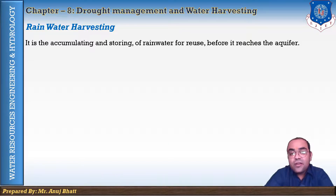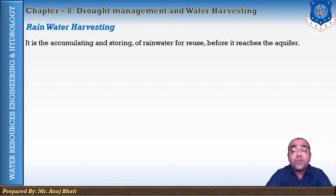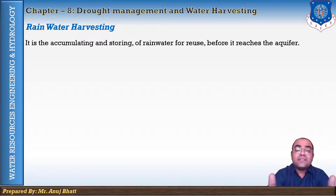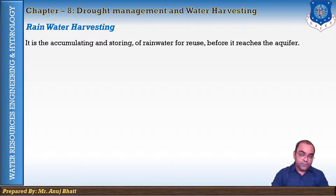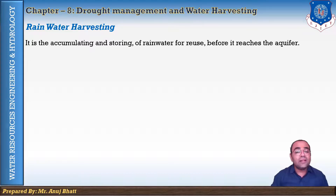A major part of our country has been continuously facing failure of monsoon and consequent deficit of rainfall over the last few years. Due to the increasing population of India, use of groundwater has increased drastically, leading to constant depletion of groundwater levels, causing bore wells and tube wells to go dry. In some places, excessive heat waves during summer are creating situations similar to drought. Surface water is inadequate to meet our demand, and we have to depend on groundwater sources.